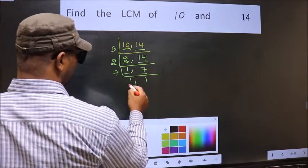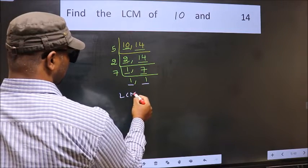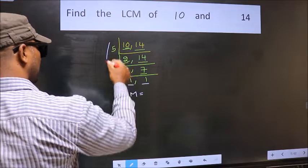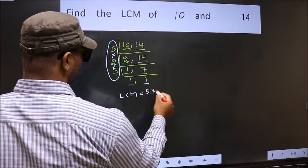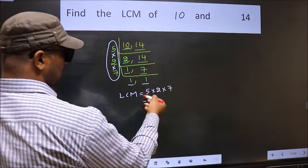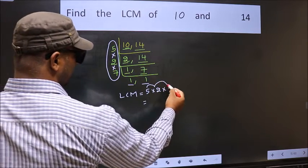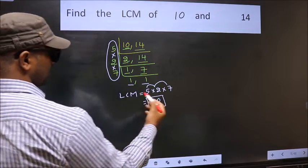So we got 1 in both places. Our LCM is the product of these numbers: 5 times 2 times 7. Let us multiply these numbers. 5 times 2 is 10, 10 times 7 is 70. So 70 is our LCM.